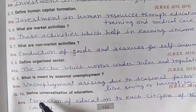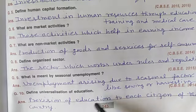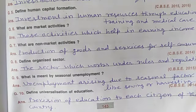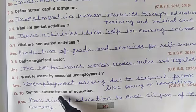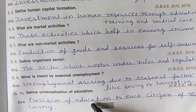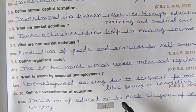Next question: define universalization of education. It means provision of education to each citizen of the country — that all citizens would get education. This is called universalization of education. So in this way, today we have done 10 questions regarding People as Resource. In the next video, we will take the next 10 questions.